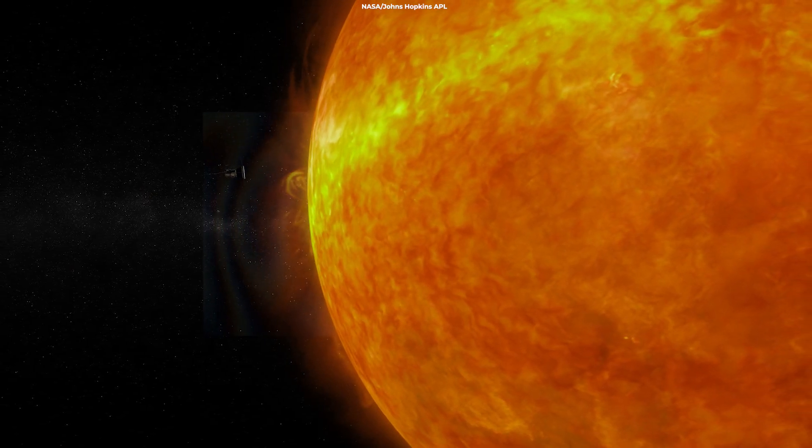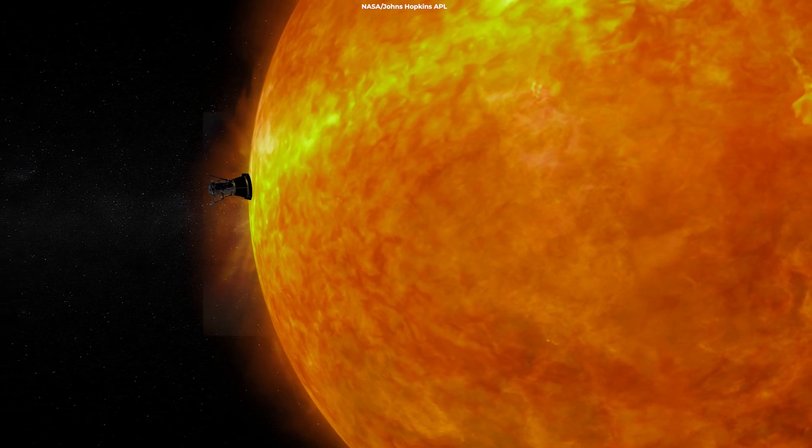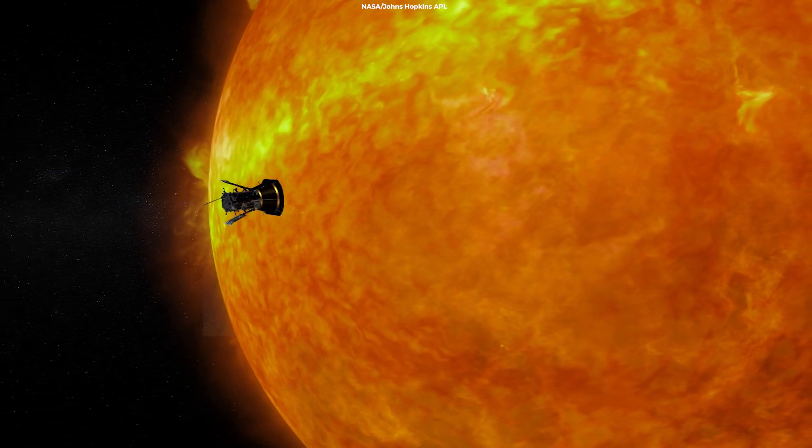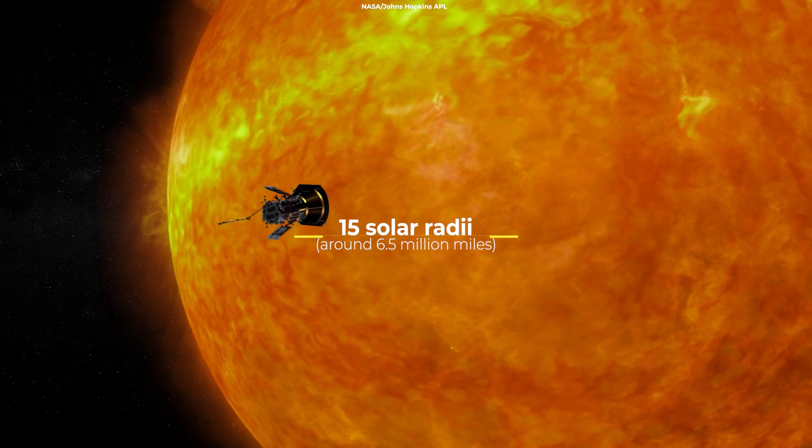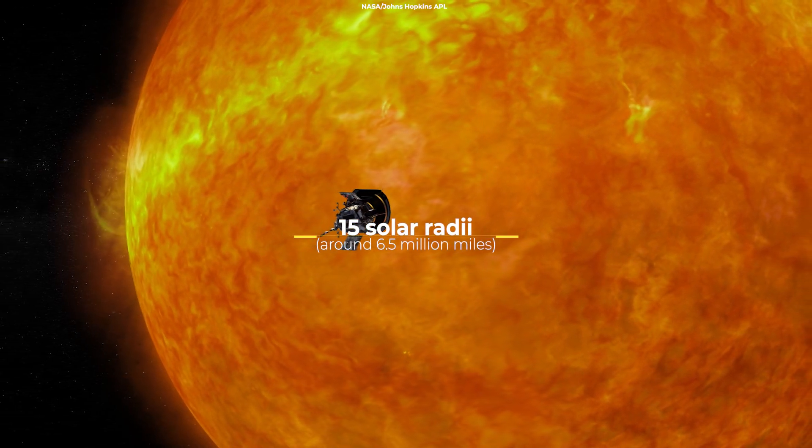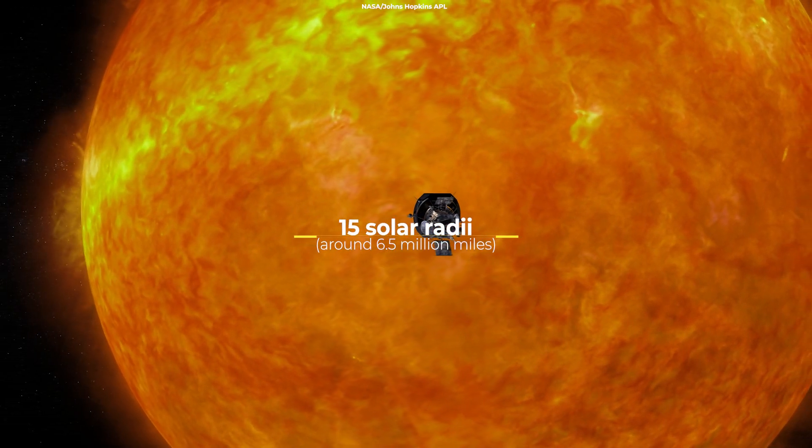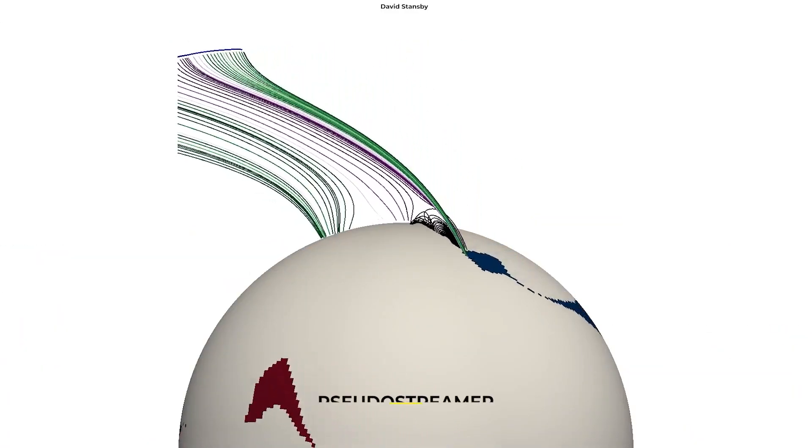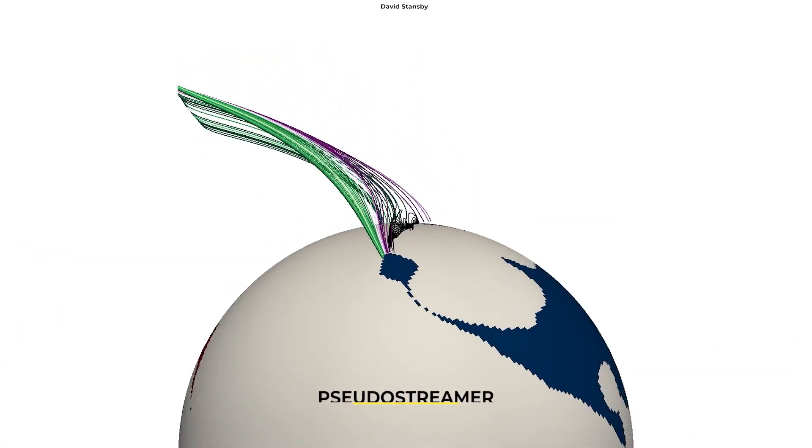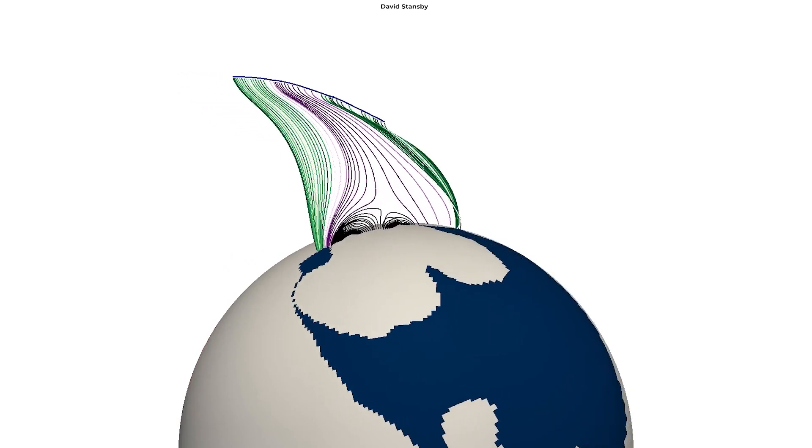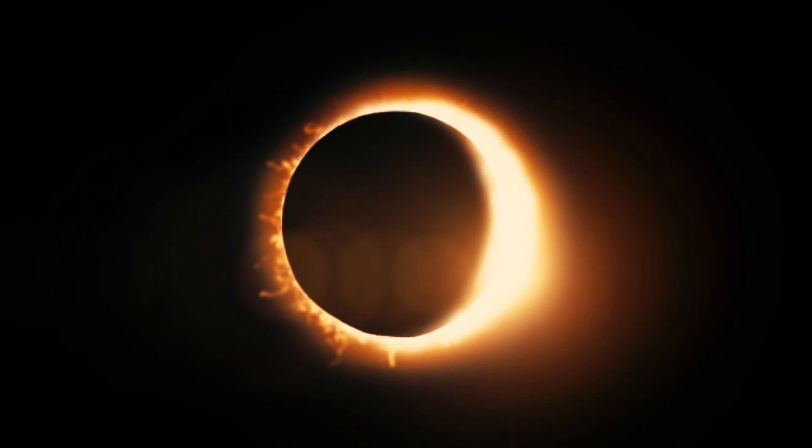Parker was only able to spend a few hours in the corona due to the intense conditions, but it did manage to go as low as 15 solar radii, around 6.5 million miles from the Sun's surface. In that zone, it found a pseudo-streamer, one of the huge structures that rise above the Sun's surface and can be seen from Earth during total solar eclipses.